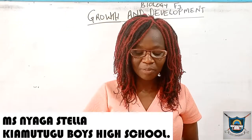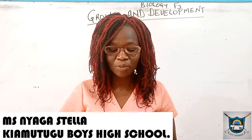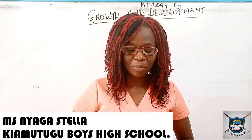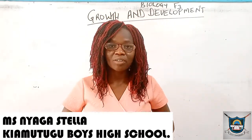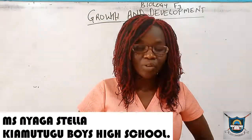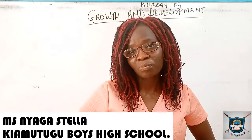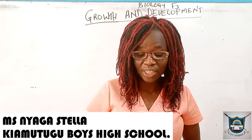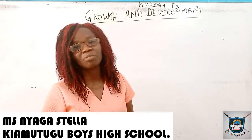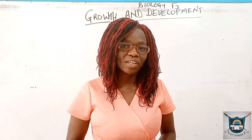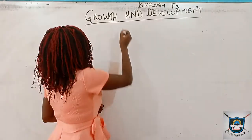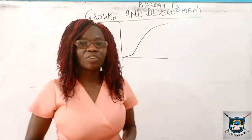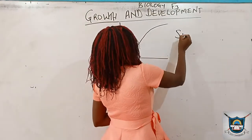Welcome learners to our biology class, Form 3. We are still continuing with our topic: growth and development. Last lesson we looked at how the growth and development graph can be drawn if we measure one of the parameters of growth, and we found that in most organisms the graph brings an S-like curve called the sigmoid growth curve.